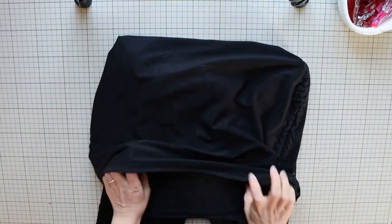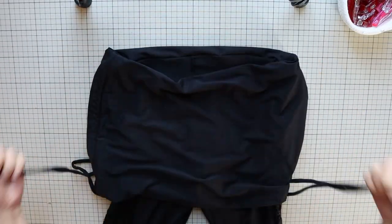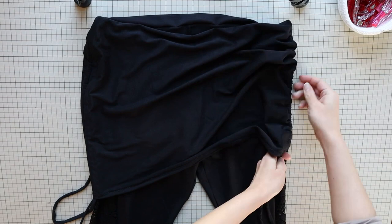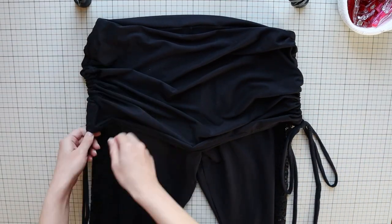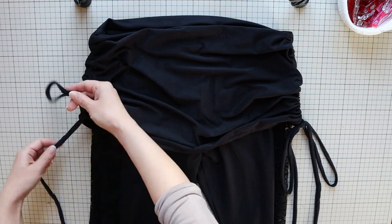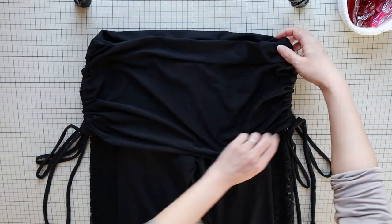If the length of the layers don't match exactly, gently pull the layers as you sew to align the edges. Bring the skirt out, scrunch the sides, and your pants with built-in skirts are complete.